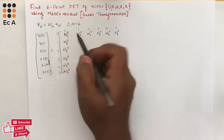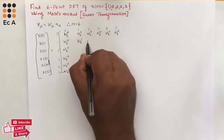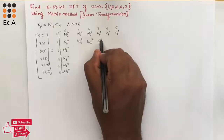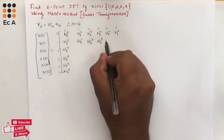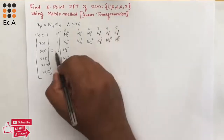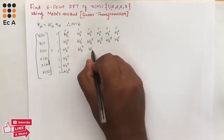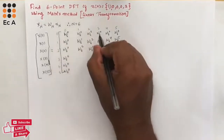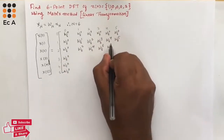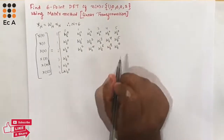For row k=1: 1×1=1, so W6^1; 1×2=2, so W6^2; 1×3=3, so W6^3; 1×4=4, so W6^4; 1×5=5, so W6^5. For row k=2: 2×1=2, so W6^2; 2×2=4, so W6^4; 2×3=6, so W6^6; 2×4=8, so W6^8; 2×5=10, so W6^10.